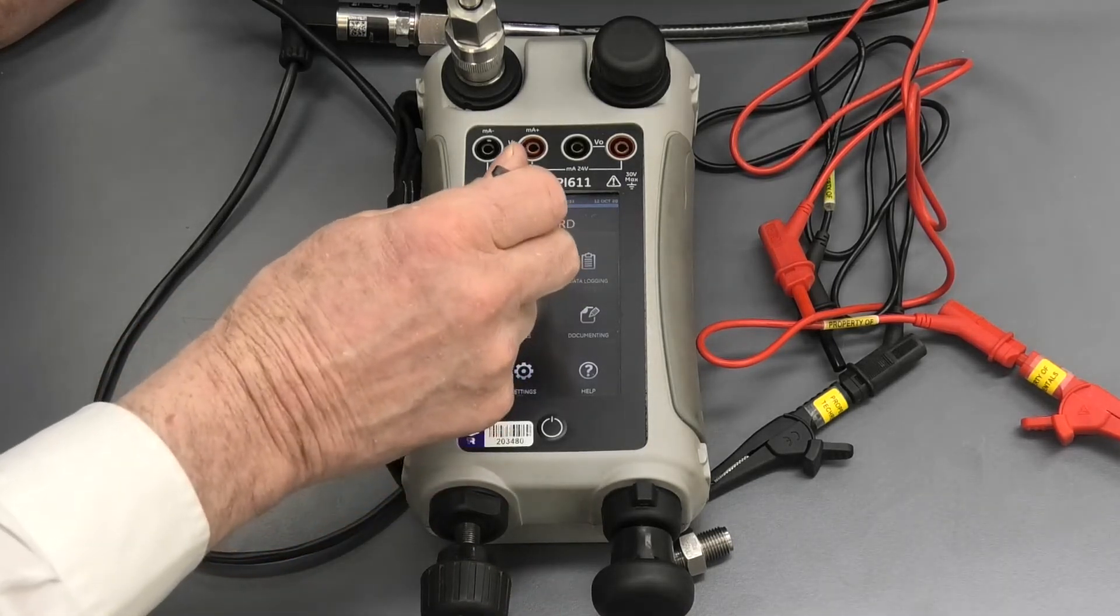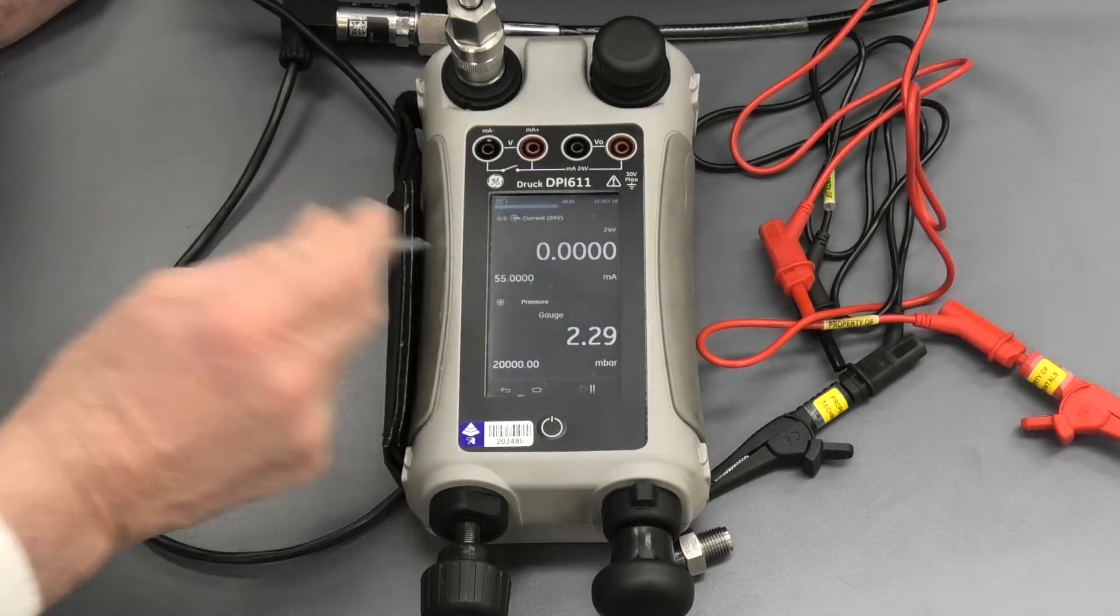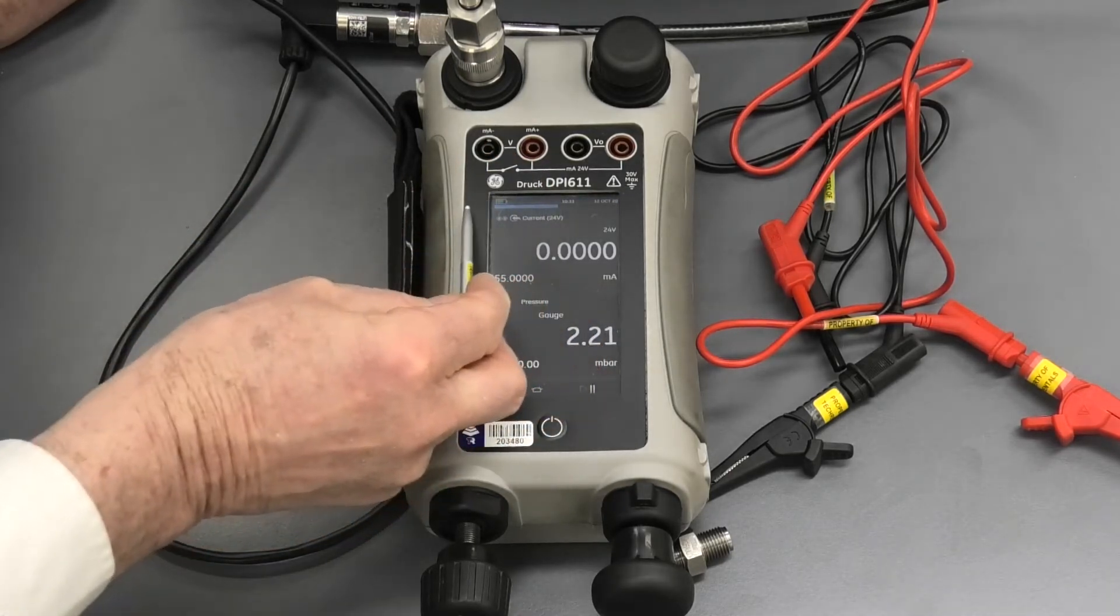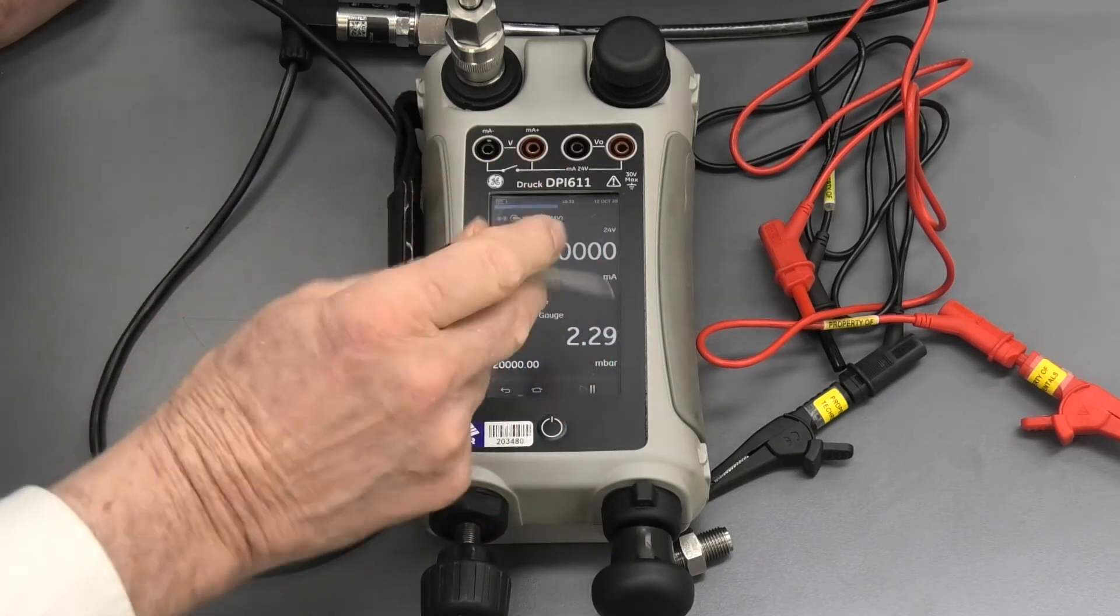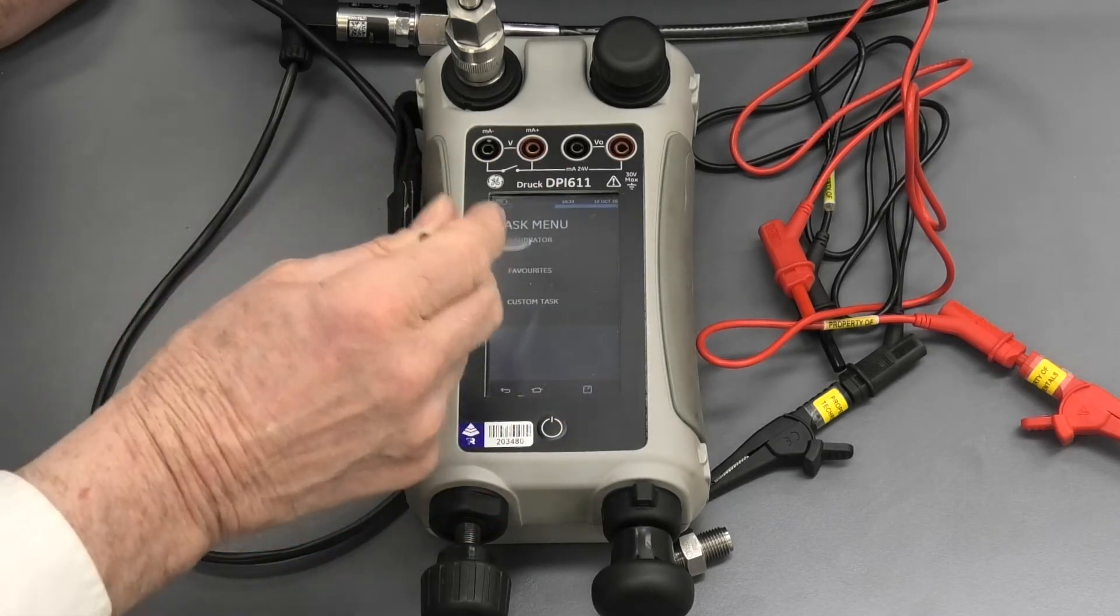So I need to go to the calibrator. So I'm going to hit this button here. Now when the calibrator comes up, here is this half blue line. Now I need to set up what the measurement we actually need to do. So I've got to swipe to the other side. Here we are.